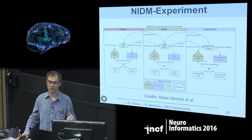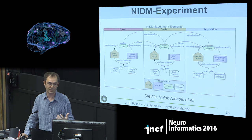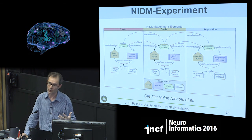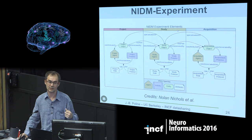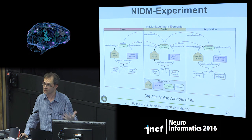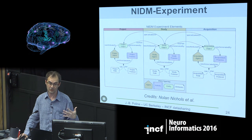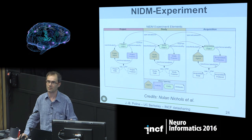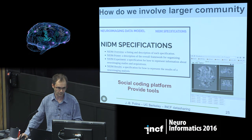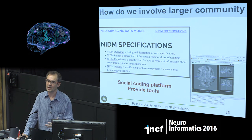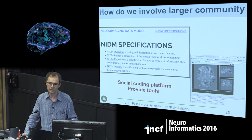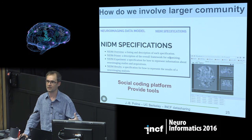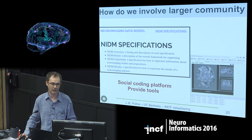Encoding all the experimental aspects is much more complex. Using W3C PROV, you need to encode the project, the specific study, the acquisitions - all those layers. It's a very long and painful process, but starting with big databases makes it possible. To engage the community and get them working on these models, we use social tools like GitHub and viewers - so anyone can look at the results produced by any of those software packages, load them, and view them without software-specific viewers.